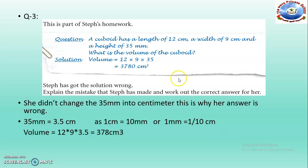Question number 3. This is part of Steph's homework where a cuboid has a length of 12 cm, a width of 9 cm and a height of 35 millimeters. What is the volume of the cuboid? Steph calculated volume as 12 × 9 × 35 = 3,780 cubic centimeters, but Steph's solution is wrong. Explain the mistake that Steph has made and work out the correct answer.